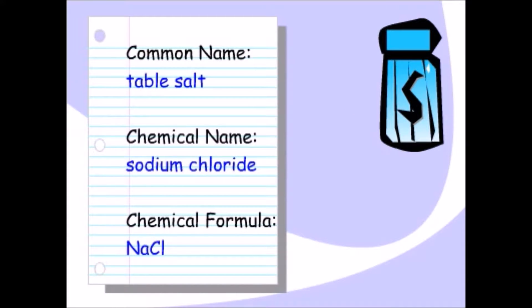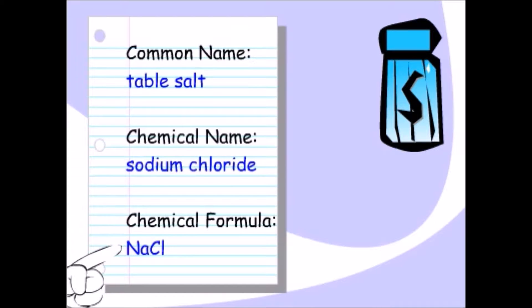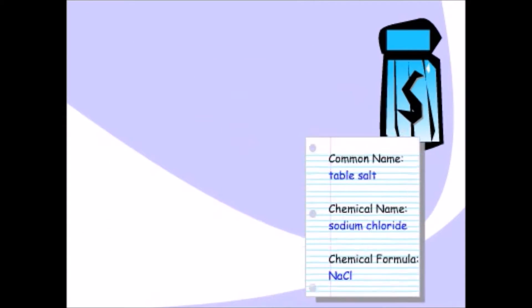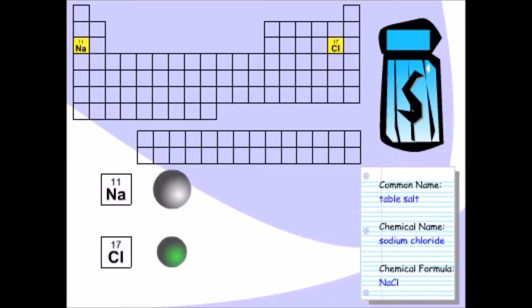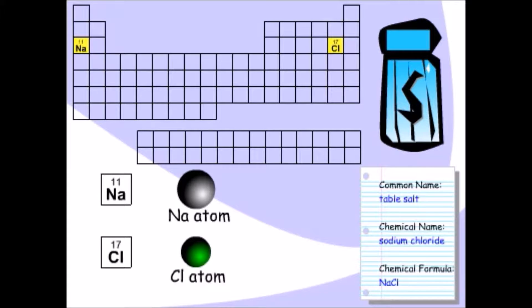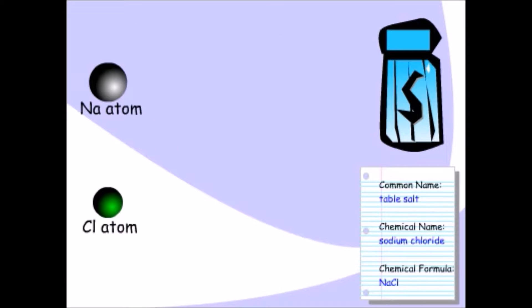Ordinary table salt is a substance you're probably very familiar with. The chemical name for table salt is sodium chloride, and its chemical formula is NaCl. We know that table salt contains the elements sodium and chlorine, but in what form? Rather than sodium atoms and chlorine atoms, sodium chloride is made up of sodium ions and chloride ions.